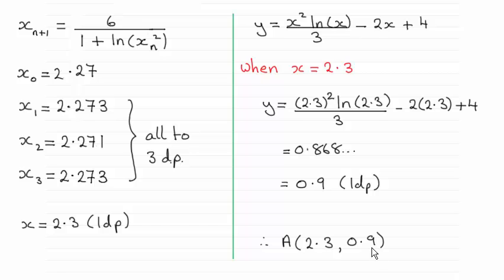Basically, from the previous part of the question, we worked out by iterative method this equation here that x1, x2, x3 were these values. Now to one decimal place, they're all going to be 2.3, so that's consistent through there.